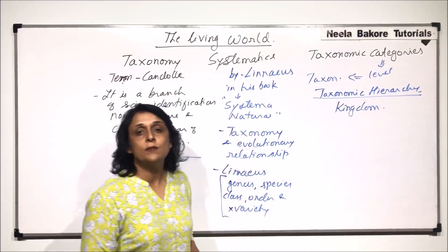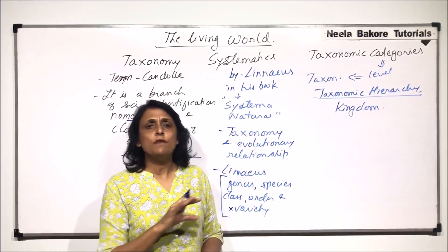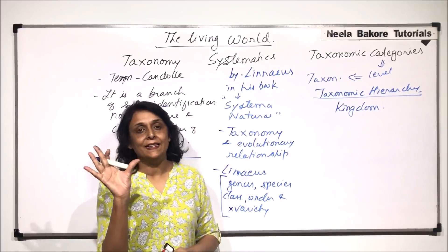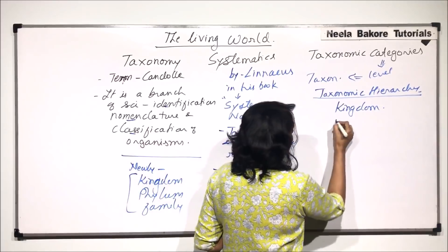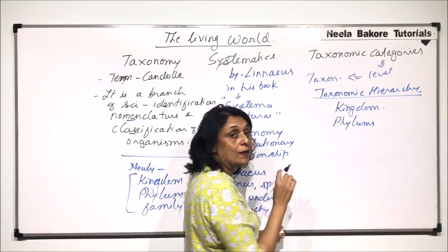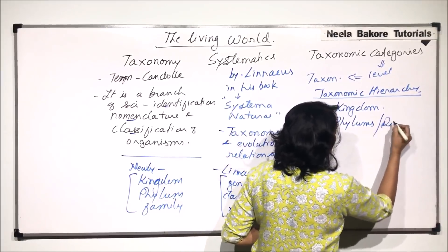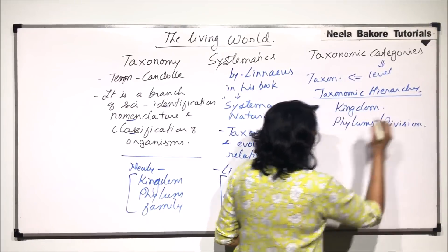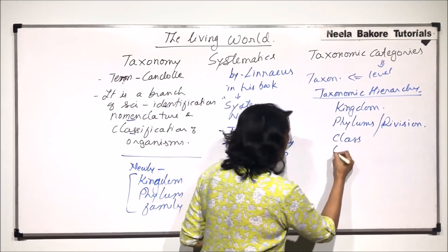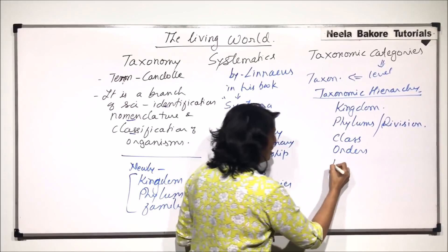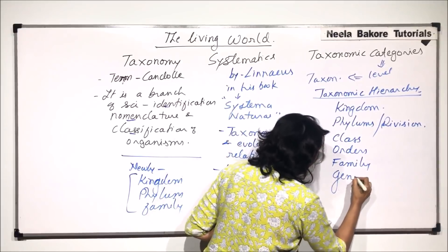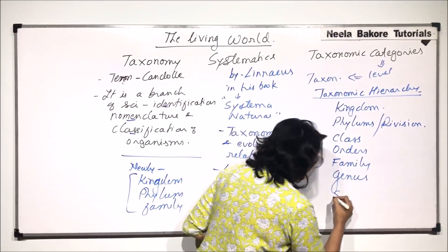If we talk about the animal kingdom, all animals — whatever group or category they belong to — are in this largest category. Within the kingdom, we have phylum. In the case of animals, we use the term phylum; in the case of plants, we use the term division. Within phylum is class; within class are orders; within orders are families; within family is genus; and within genus is species.